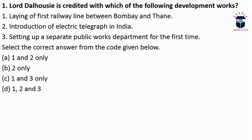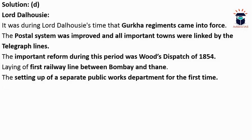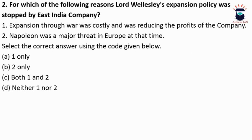The first question is: Lord Dalhousie is credited with which of the following development works? First, laying of the first railway line between Bombay and Thane. Second, introduction of electric telegraph in India. Third, setting up a separate public works department for the first time. This is an easy question — all these works were done by Lord Dalhousie, so option D is correct. Many things were introduced during his time: the Doctrine of Lapse, improved postal system, telegraph lines linking important towns, Wood's Dispatch of 1854, the first railway line between Bombay and Thane, and a separate public works department.